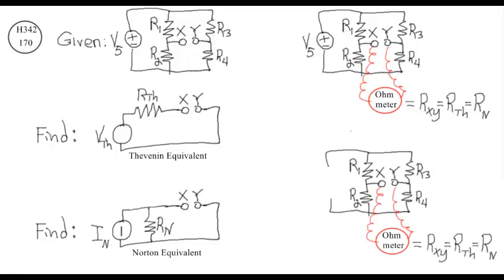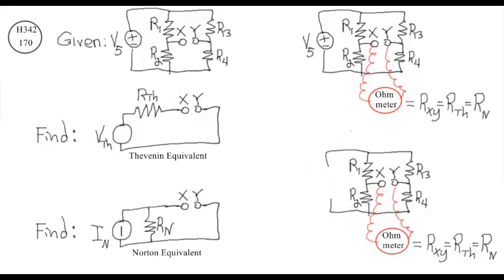There — we removed the voltage source, and it's currently open where the voltage source was. We have to replace all voltage sources with wires or shorts. Had there been a current source, we would have left it open. That's the rule: replace all voltage sources with wires, and replace all current sources with opens.